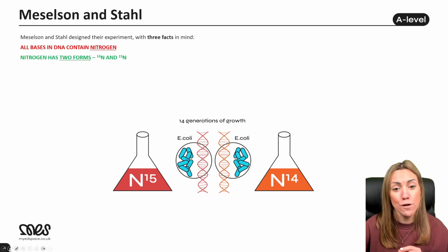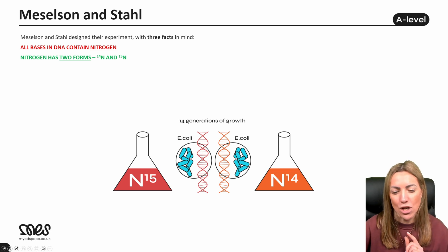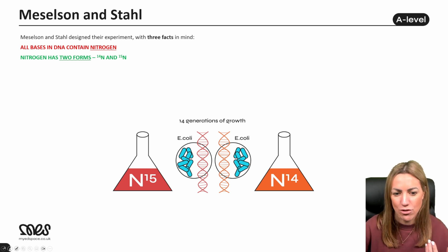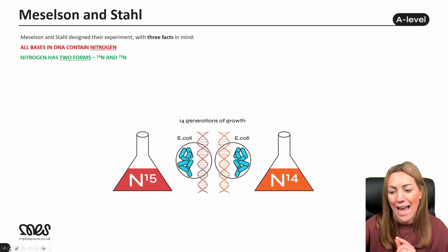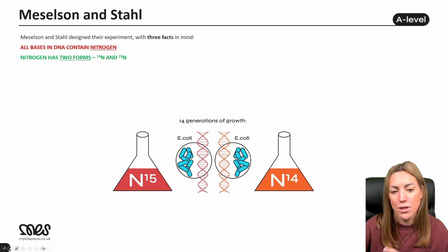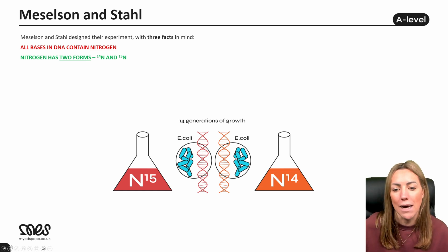Nitrogen has two forms, or two different isotopes. N14, which we can call light nitrogen, has a mass number of 14. N15, which we can call heavy nitrogen, has a mass number of 15. This is because they have the same number of protons but different numbers of neutrons, so their mass number ends up being different.